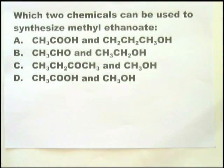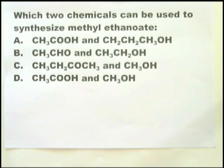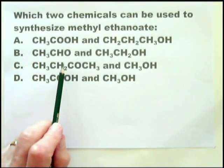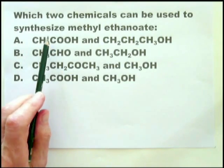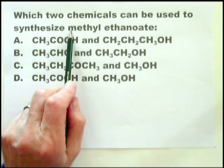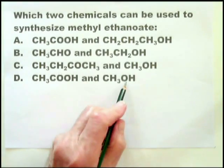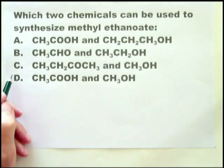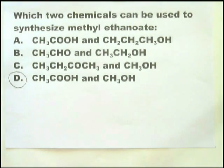In this question, the examiner is trying to assess whether you understand what the two components of methyl ethanoate are — what the two components of an ester are. The two components of any ester are an alcohol and an acid. So you can forget this one and that one. It's a test between A and D. And because the alcohol is methyl alcohol, this is that. And this clearly is ethanoate, so the answer is D. This is another one you should be able to do quickly — less than 10 seconds.